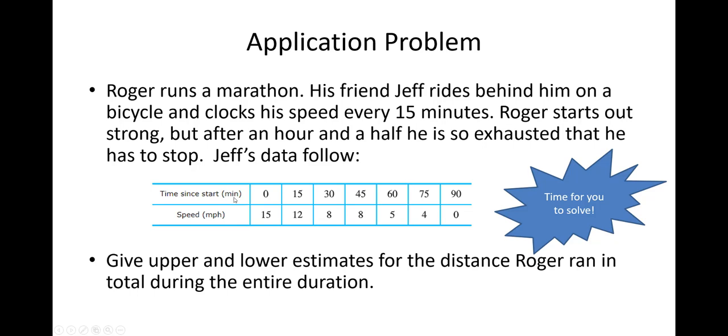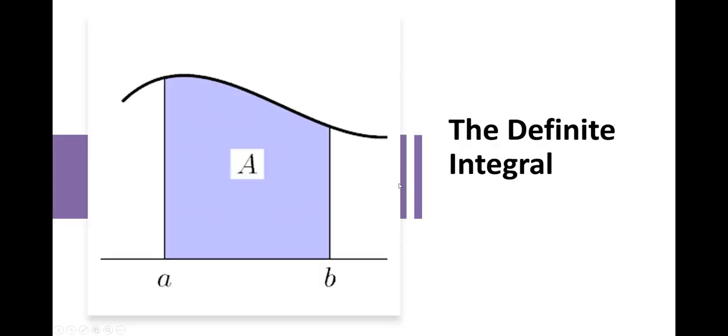One big hint, hint, wink, wink, wink. Notice this is in minutes and this is in hours. Remember, when you do, let's say, an upper estimate, you're probably going to start right here, right? Because that's a larger value. The lower estimate, you would start at 12. So the upper estimate, you're going to use 15, 12, 8, 8, 5, 4. The lower estimate, you're going to use 12, 8, 8, 5, 4, and 0. I know the 0 doesn't matter, but just in case it actually did matter, that's the value you're going to use. So be careful because remember, you add your values up and multiply it by the length of the interval. Don't you dare multiply by 15. You're going to have to convert minutes into hours.